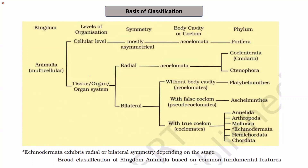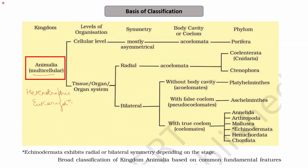From this figure, what we can learn about Annelida is that they belong to the kingdom Animalia. They are multicellular, they are heterotrophic — that is, their mode of nutrition is heterotrophic — and they are eukaryotes. These are the basic characters of organisms that belong to the phylum Annelida.